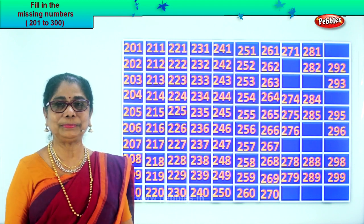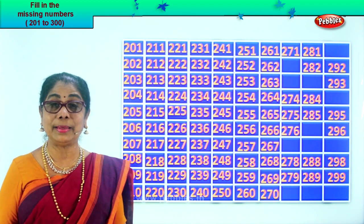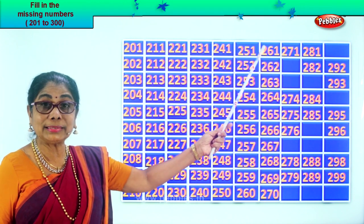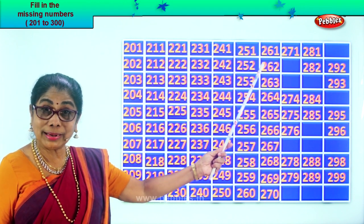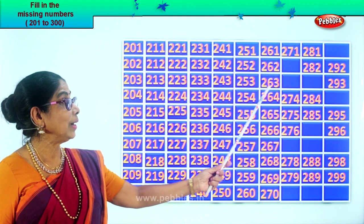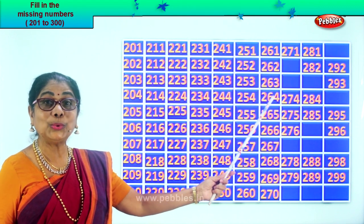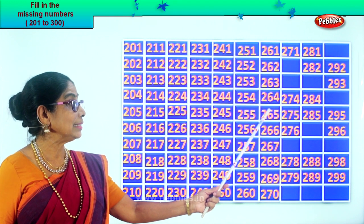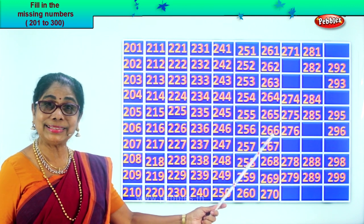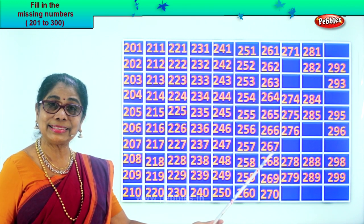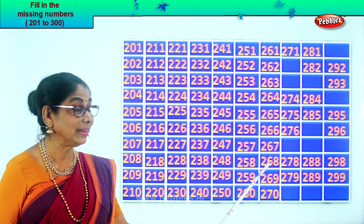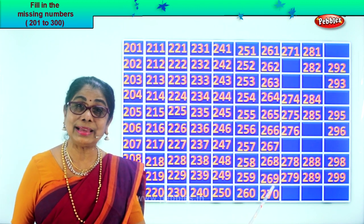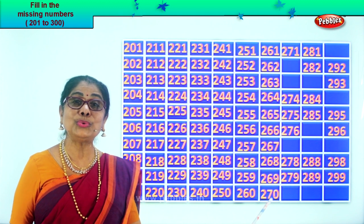Good. Let's read the filled-in numbers: two hundred and sixty-one, two hundred and sixty-two, two hundred and sixty-three, two hundred and sixty-four, two hundred and sixty-five, two hundred and sixty-six, two hundred and sixty-seven, two hundred and sixty-eight, two hundred and sixty-nine, two hundred and seventy.